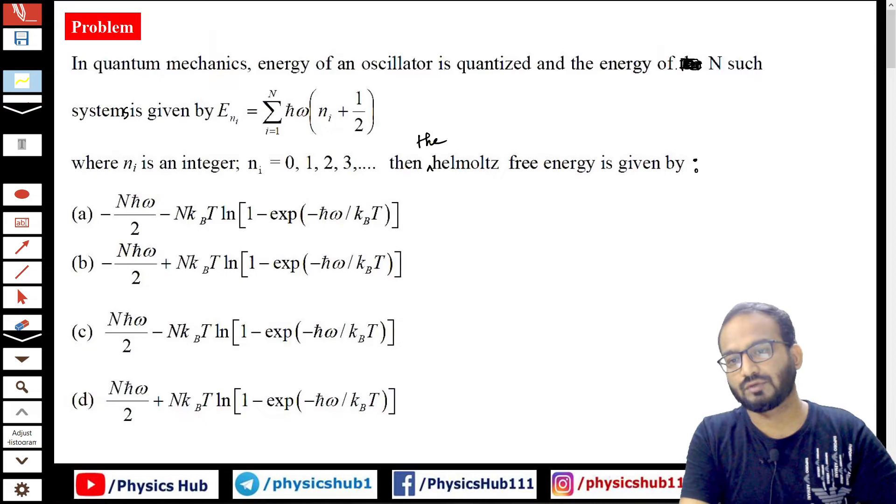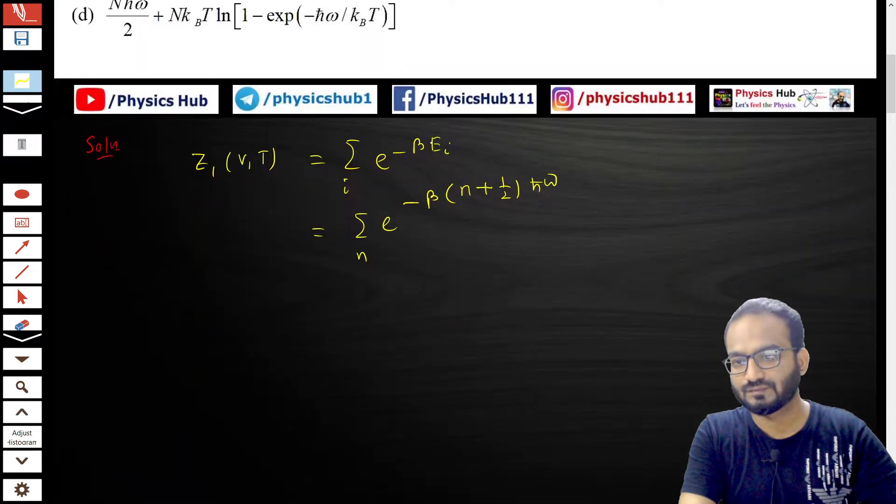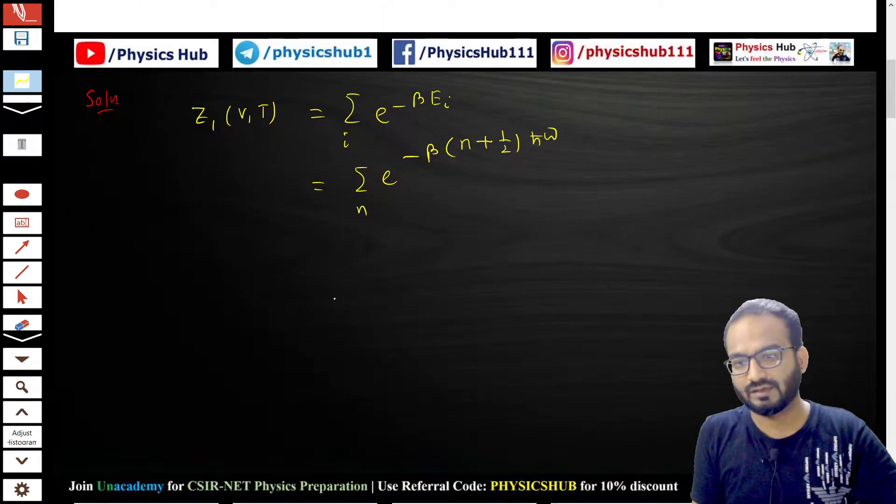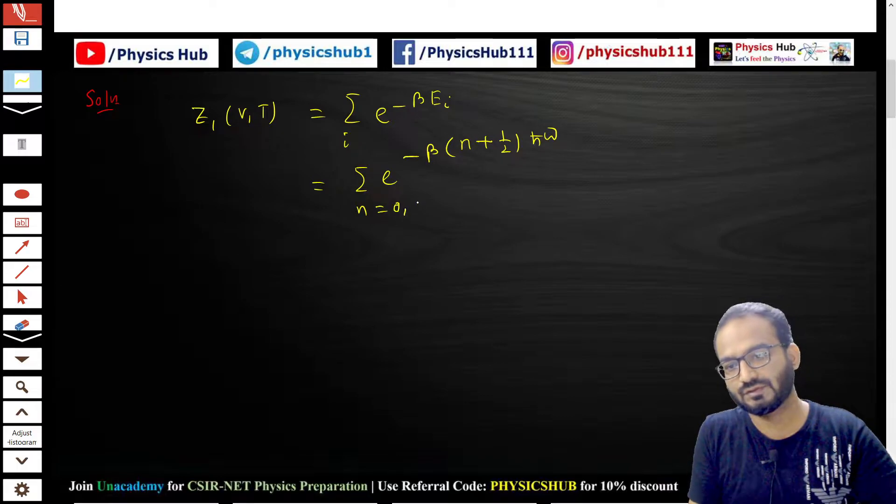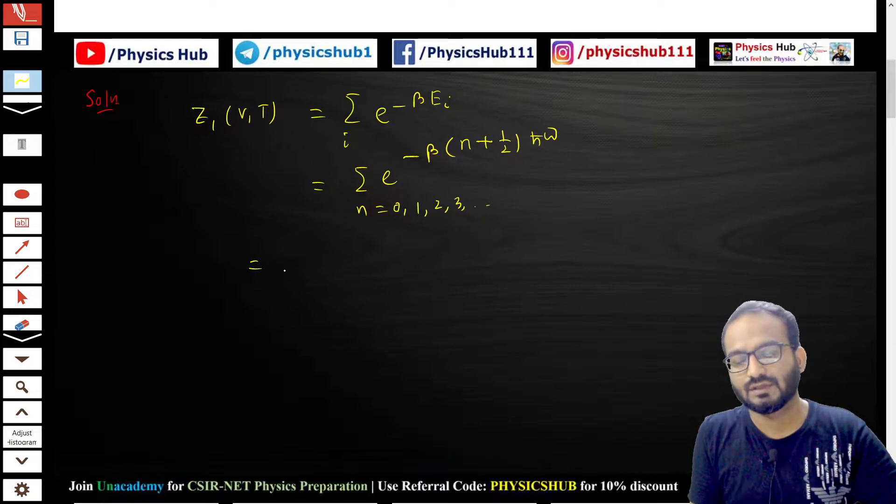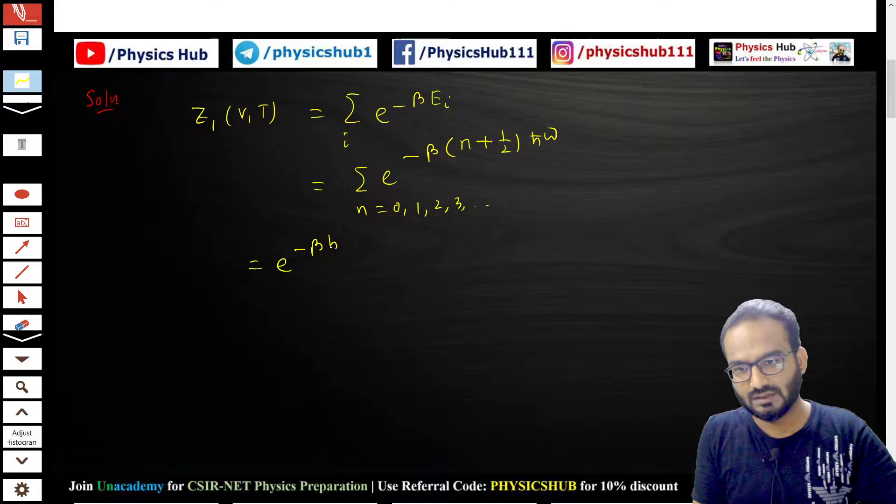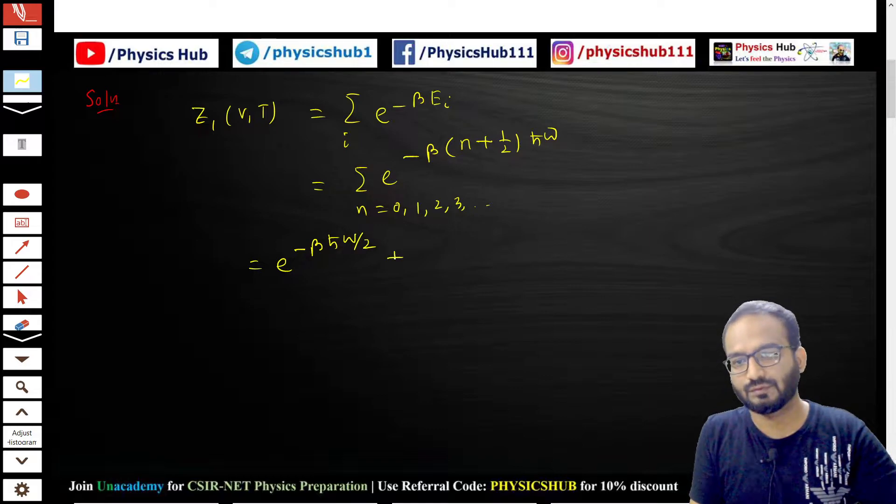This is for a one-dimensional harmonic oscillator. The sum is over n running from 0, 1, 2, 3... If you put n equals 0, you get e to the power minus βℏω/2. If you put n equals 1, you get e to the power minus 3βℏω/2, and if you put n equals 2, you get e to the power minus 5βℏω/2, and so on.